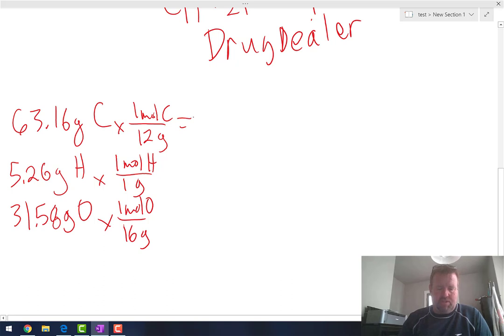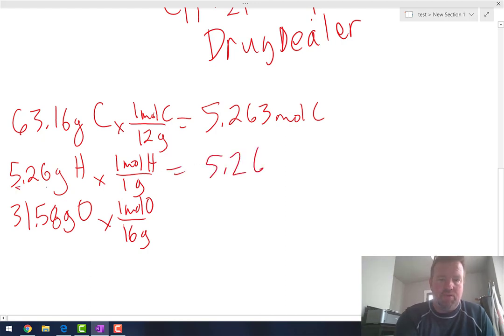63.16 divided by 12 equals 5.263. And significant figures here don't matter. For hydrogen, it's also 5.26 moles of hydrogen. And then oxygen, 31.58 divided by 16 equals 1.974 moles of oxygen.